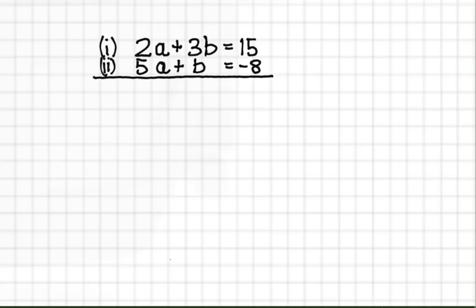Hello and another warm welcome to MathsPlus. Today we will be covering simultaneous equations. As you can see we have two equations. We have 2a plus 3b is equal to 15 and we have 5a plus b is equal to negative 8.